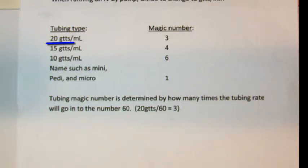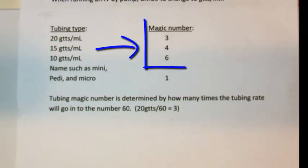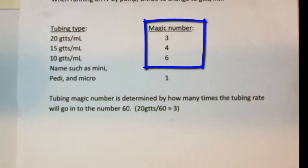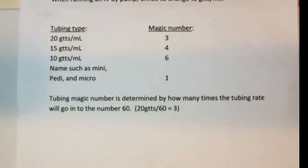As you can see from the tubing type listed, 20 drops per milliliter, 15 and 10, all correspond with magic numbers based on how many times that tubing number goes into the number 60. Because 20 drop per milliliter, 20 goes into 60 three times, the magic number for this type of tubing would be 3.